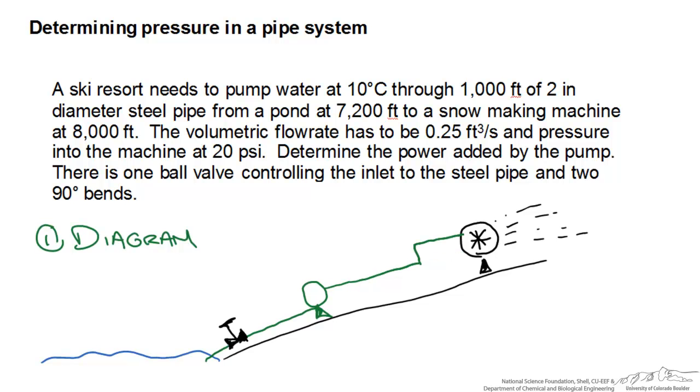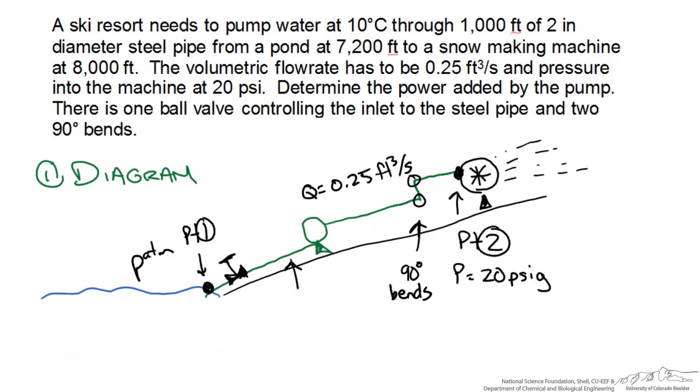Now that we have a diagram, it's important to label the points we're interested in. At the entrance of our piping system, point 1, and at the exit into the machine, point 2. This is open to atmosphere and the pressure into the snow blowing machine has to be 20 psi gauge. The volumetric flow rate Q has to be 0.25 ft³/s. This is a steel system with an entire length of 1,000 feet and elevation change of 800 feet.